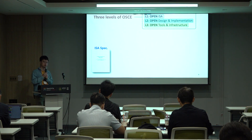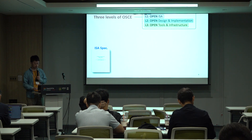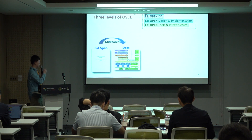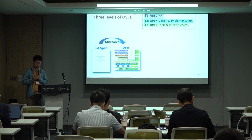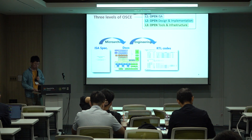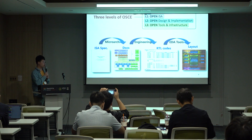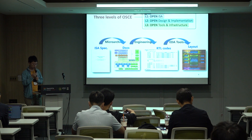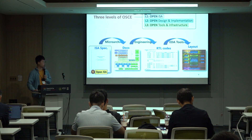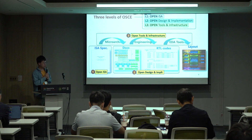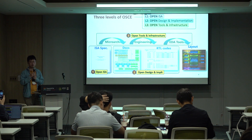Next, let's see what is inside an open source chip ecosystem. At the first level, we know the ISA can be open source — we have seen the growth of RISC-V in the past 10 years. Under this ISA spec, we have some micro-architecture definition, including documentation describing what the processor is about and what modules are in it. Then we convert the RTL specification to RTL code. In the end, commercial EDA tools will take the RTL input and output a GDS2 layout for the chip. So we have three levels: open ISA, open design described in RTL, and open source tools and infrastructures.